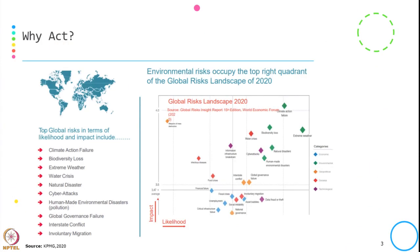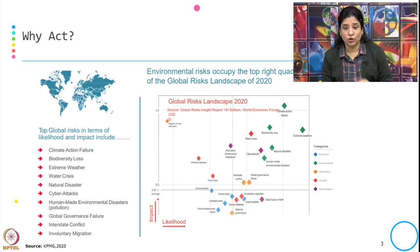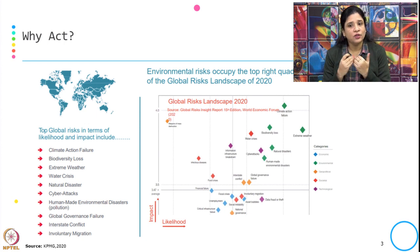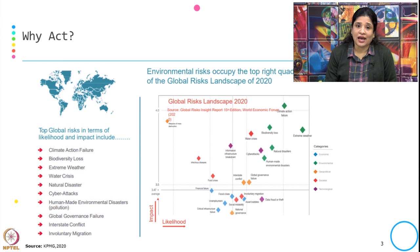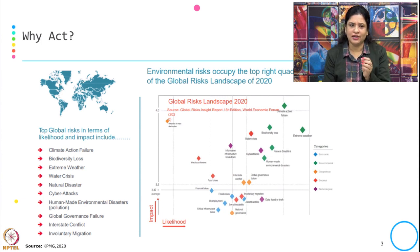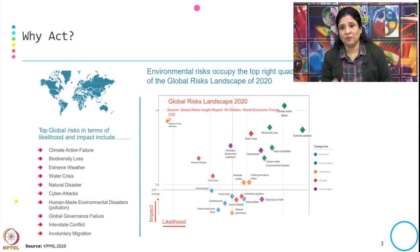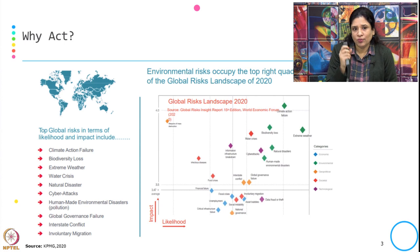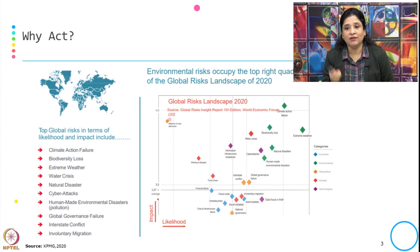Before getting into the financial products and services, let us look at a notable image provided by KPMG. The impact it is showing may not be beautiful, but the way it shows the different kinds of risks we are facing right now is very informative. The top global risks in terms of likelihood and impact include climate action failure, biodiversity loss, extreme weather, water crisis, natural disasters, cyber attacks, human-made environmental disasters, global governance failure, interstate conflict, and involuntary migration. This picture, prepared by the World Economic Forum, shows the impact and the global risk landscape coming from climate action failure, biodiversity loss, and other environmental issues.